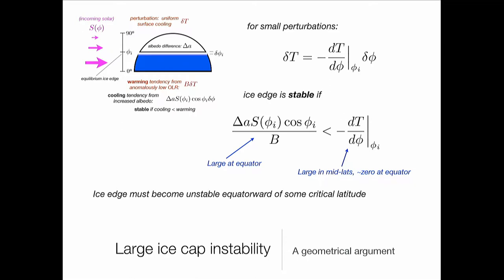This term is big in mid-latitudes and goes to zero at the equator; the other term is large at the equator. It's basically an unavoidable consequence of living on a sphere that's differentially heated by the sun that, at some point, if there's any albedo difference between the cold and the warm regions, this is going to become unstable. Once it becomes unstable, the positive feedback from the albedo takes over and the ice runs away to the equator. That's the phenomenon we call large ice cap instability, and I'm trying to convince you that we find it in every climate model that has any representation of albedo feedback — because it's unavoidable when we live on a sphere.